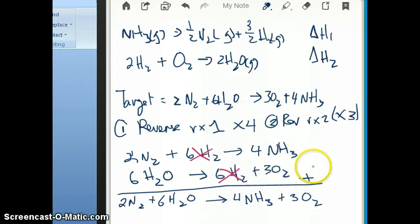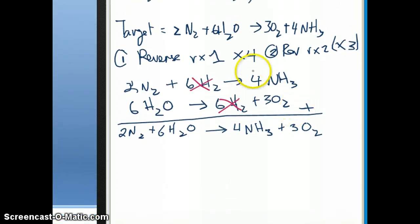So the first manipulation I did is reverse reaction 1 and multiply by 4, which means that if I want to calculate delta H of my target reaction, then I have to take delta H1, which remember was plus 46. I'm going to multiply that by negative 4. So that's going to be in units of kilojoules. And then I'm going to add to that reaction 2.